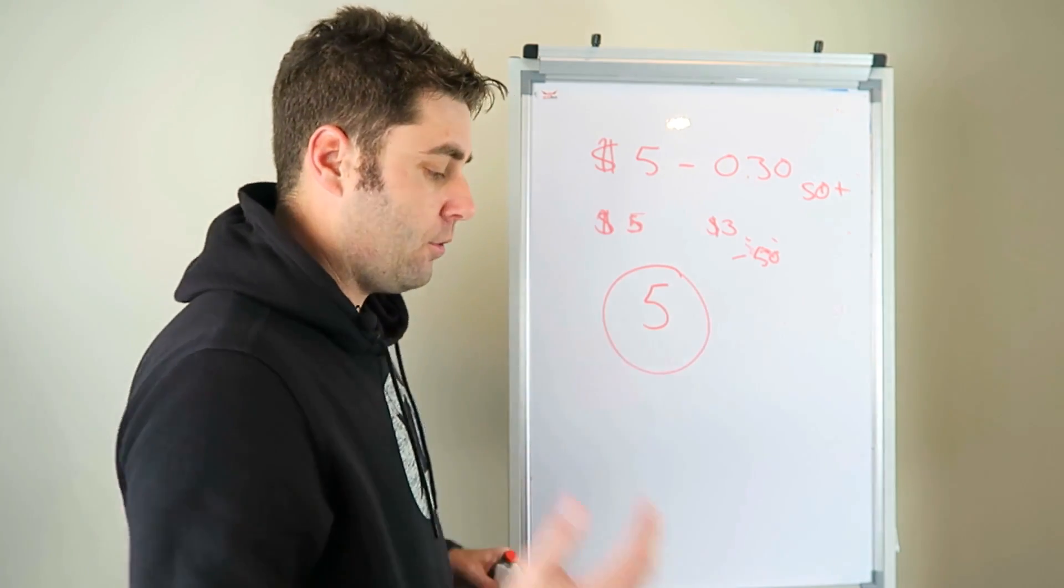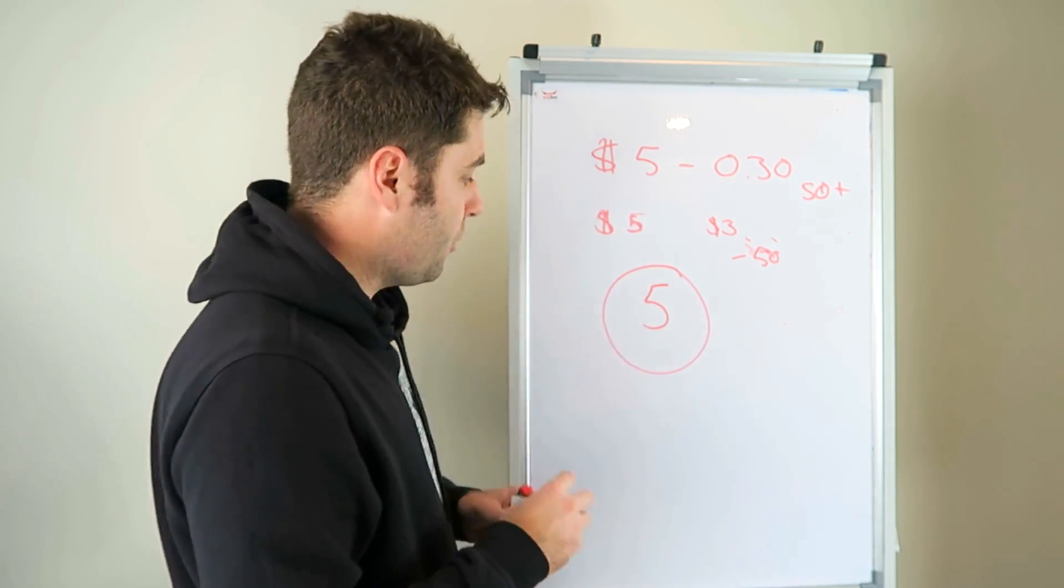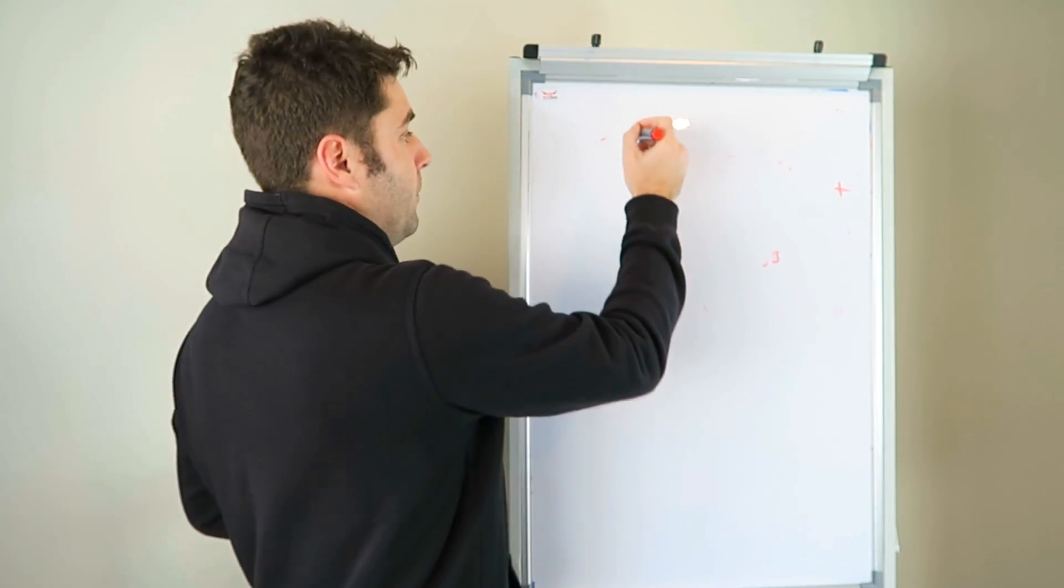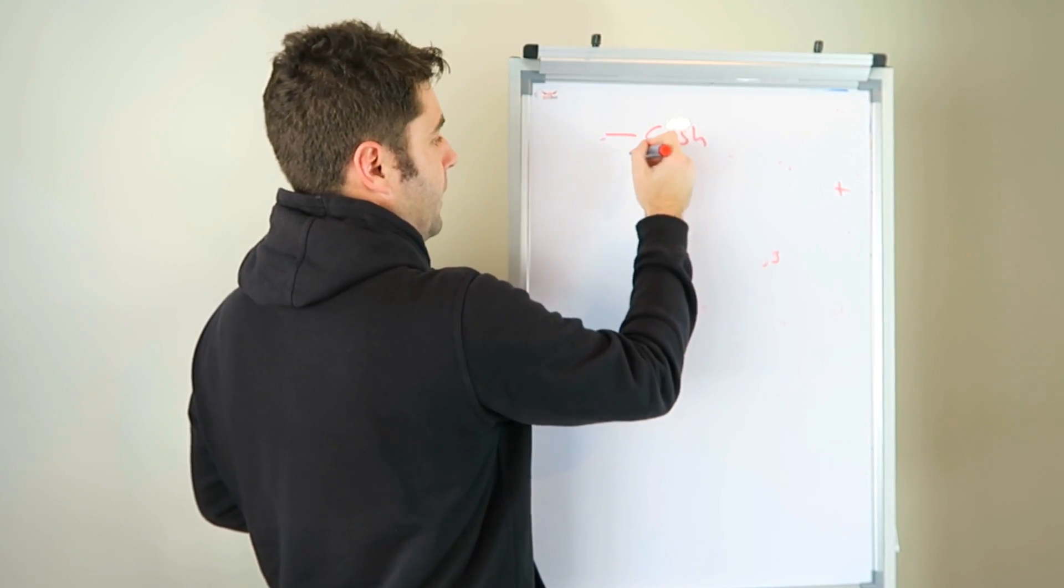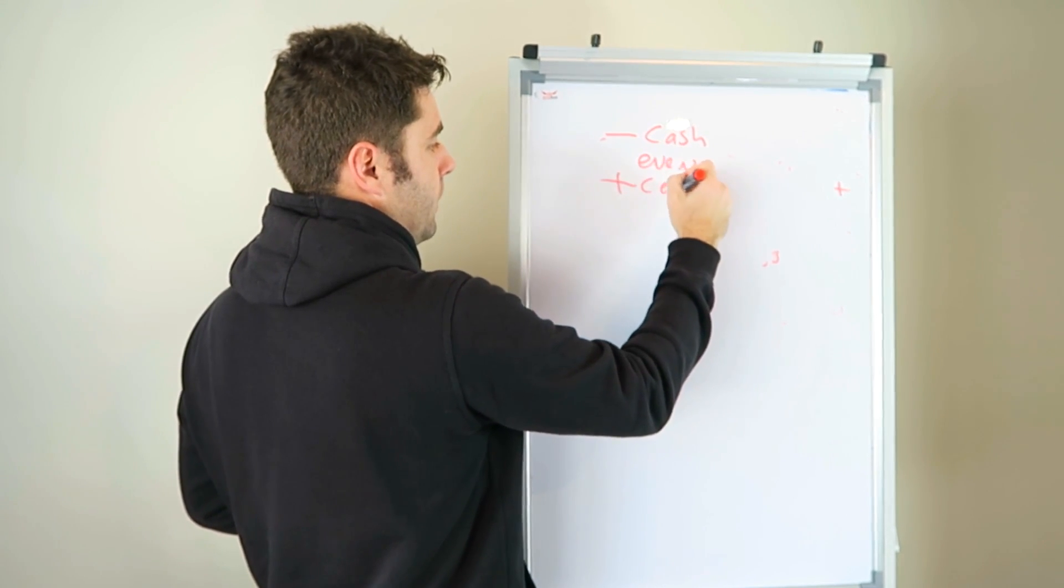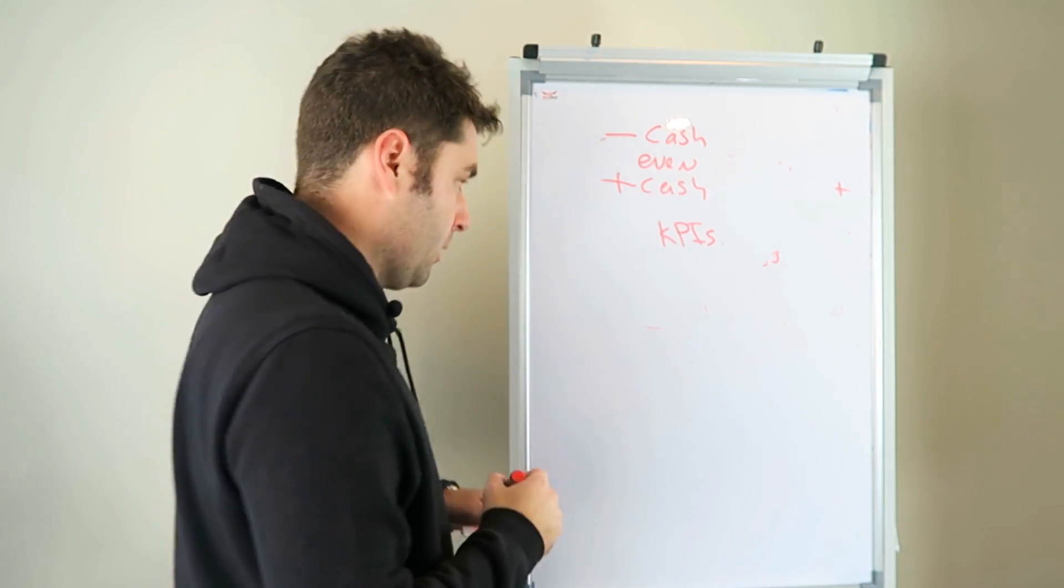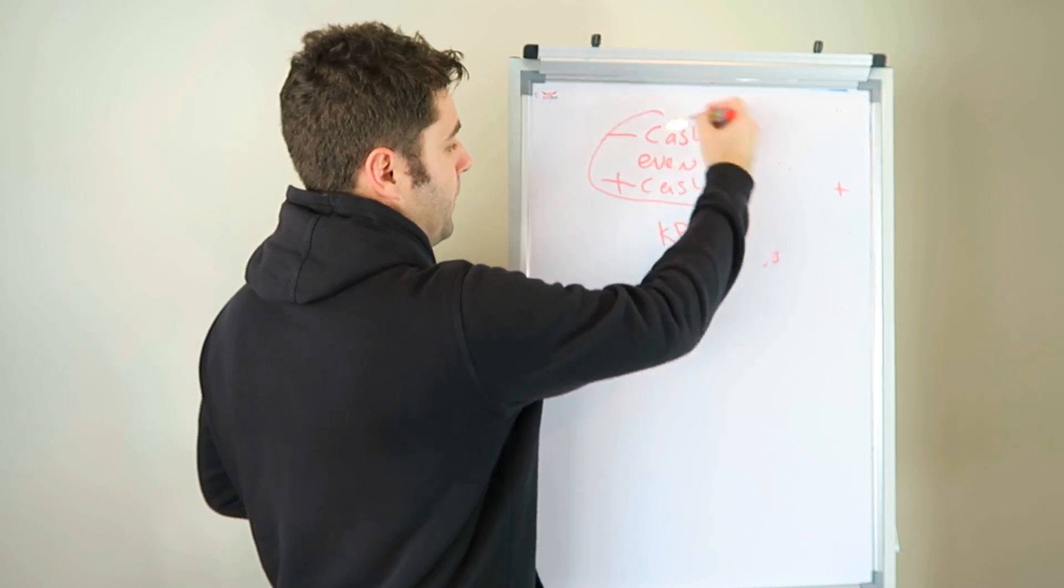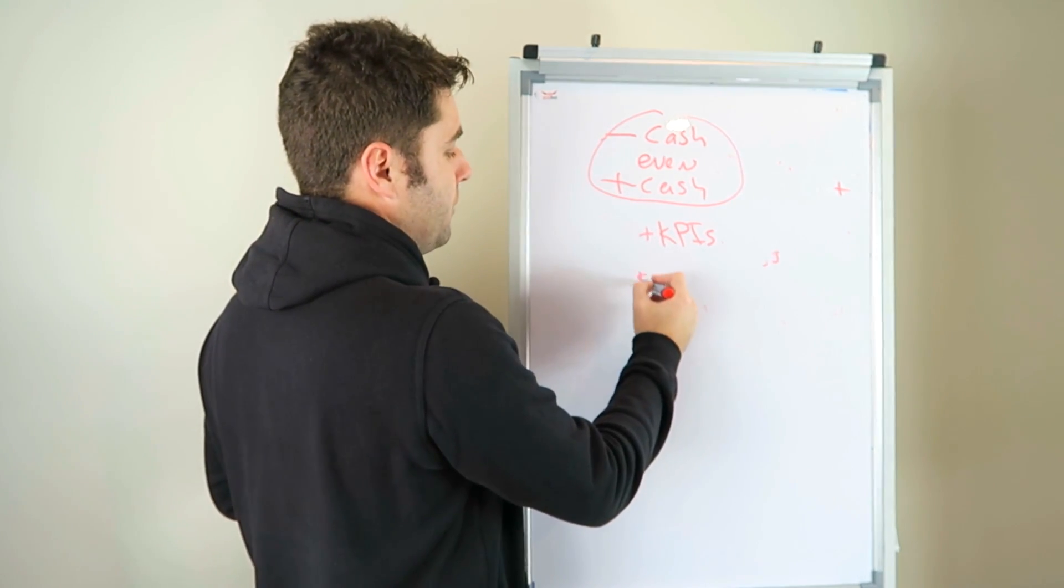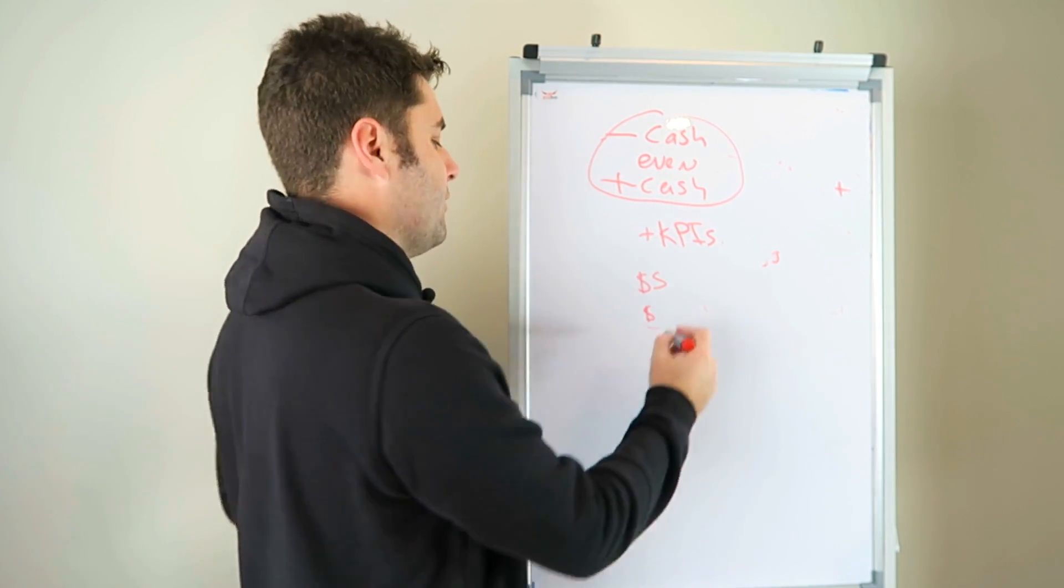We all have different objectives. We're all getting different costs. And that's kind of what sets, I think, sets the successful people apart from the rest because the successful people concentrate on their data. So I'll just do one more thing here actually, sorry. So for me, I concentrate on negative cash flow, even, and positive cash flow, and my KPIs, right? Which is what Miles was talking about this morning in the chat. These are my three things I worry about and my KPIs come after that.